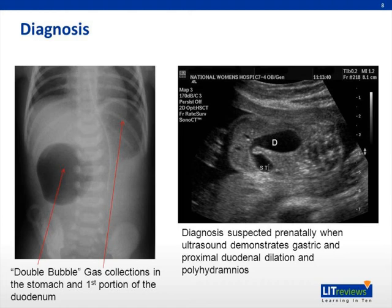An abdominal radiograph demonstrating a double bubble appearance — two distinct gas collections or air-fluid levels in the upper abdomen resulting from the markedly dilated stomach and proximal duodenal bulb, with no distal gas — is usually diagnostic of duodenal atresia, and no contrast studies are necessary. If the infant's stomach has been decompressed by vomiting or nasogastric aspiration, 30 to 60 mLs of air may be injected through the nasogastric tube to reproduce the double bubble sign. Air makes an excellent contrast agent, obviating a barium or water-soluble contrast study in routine cases.